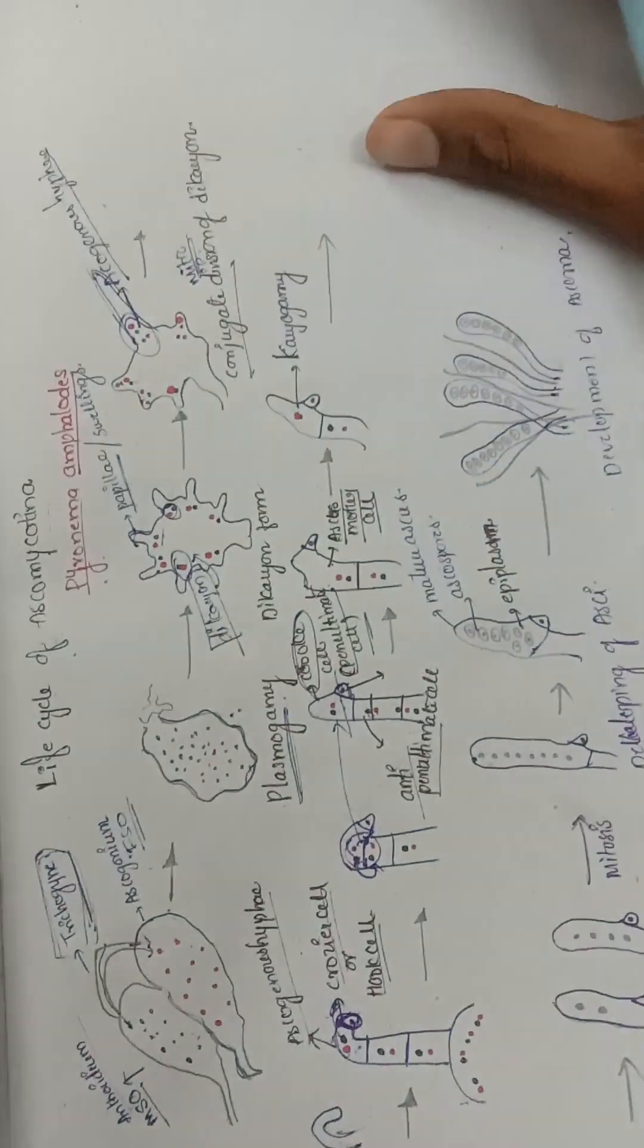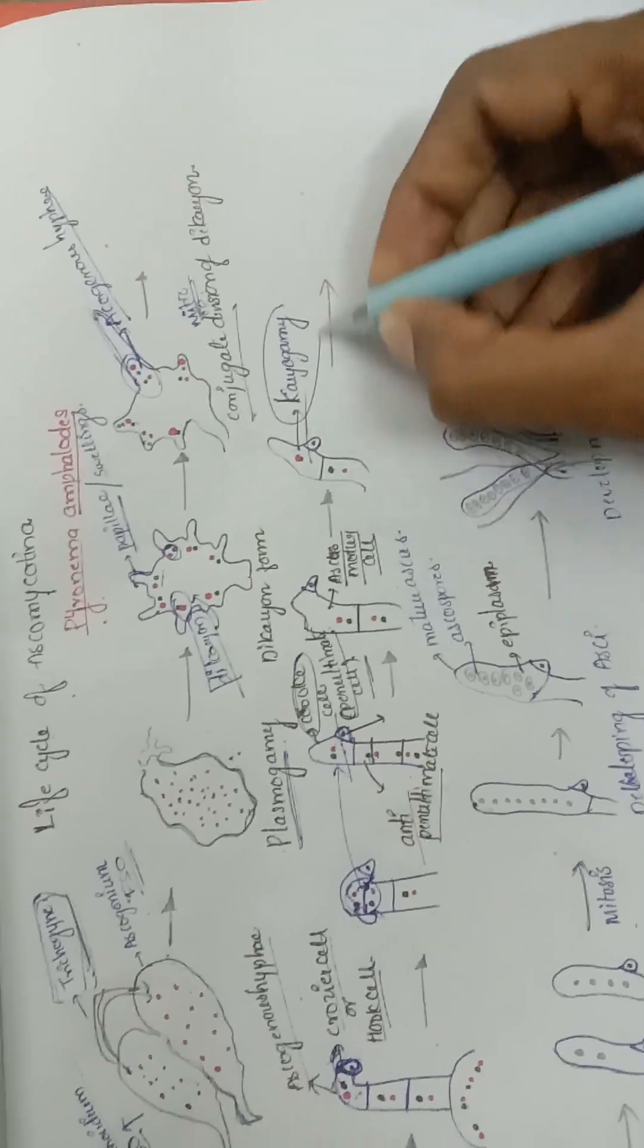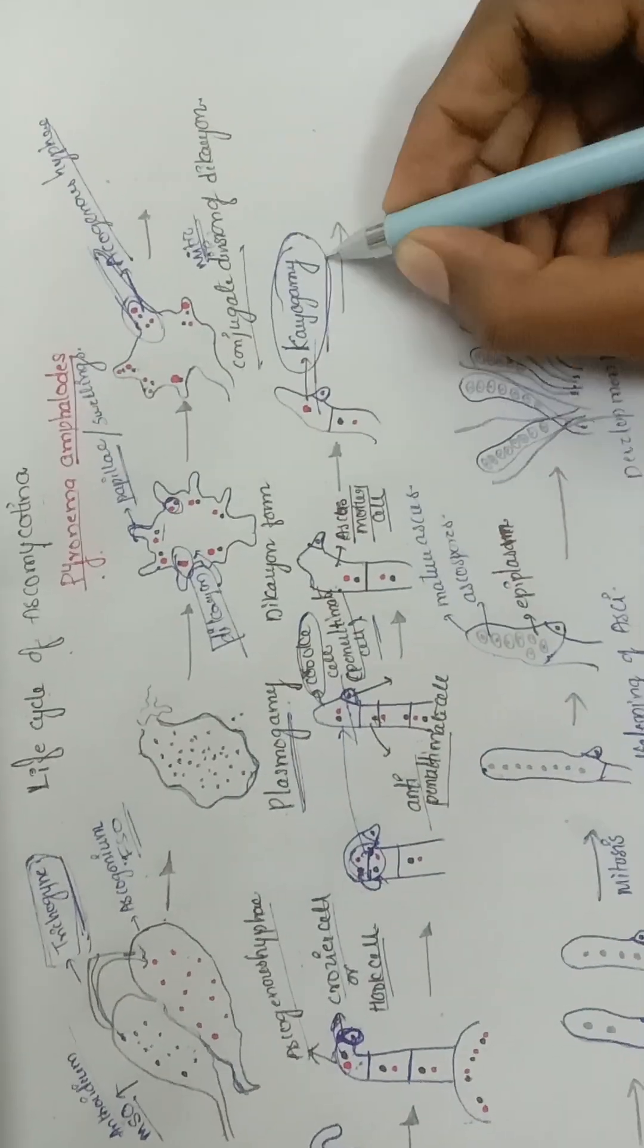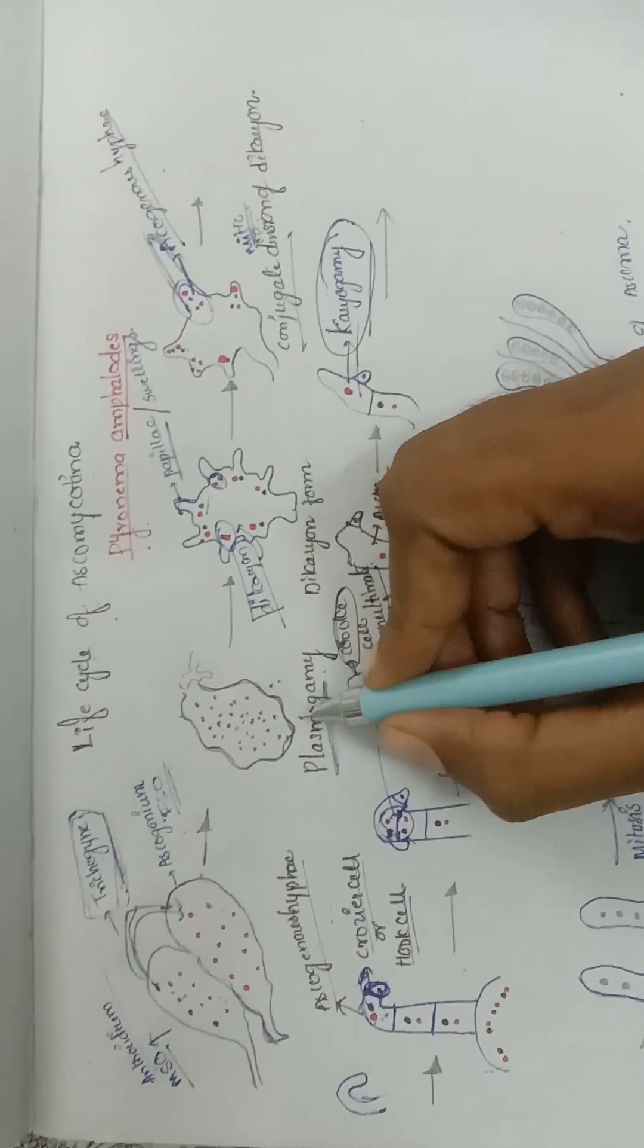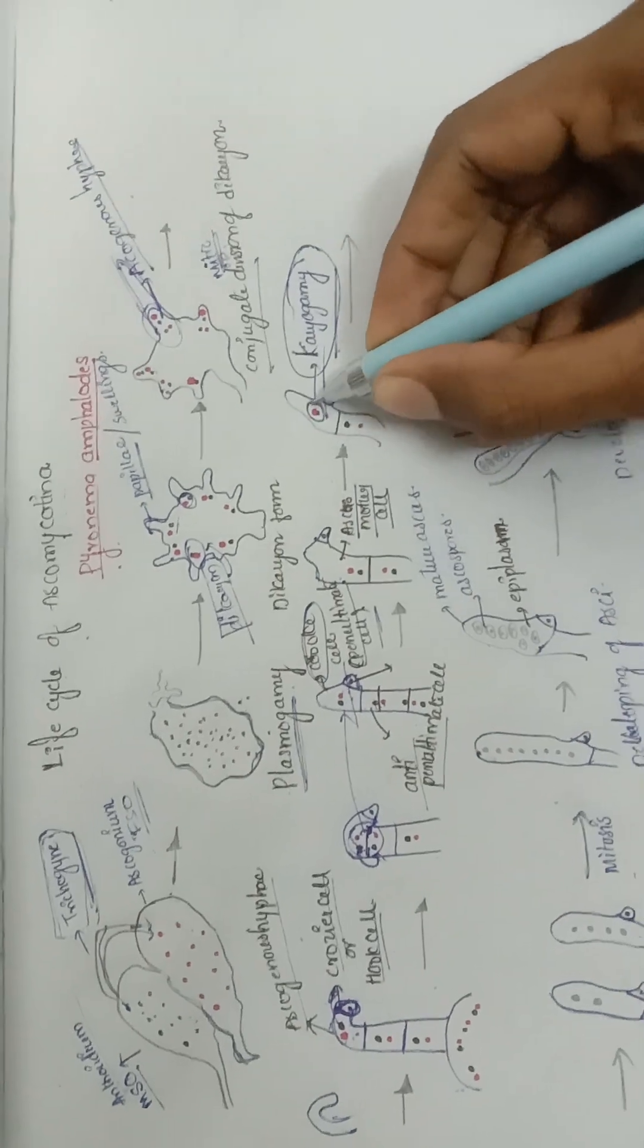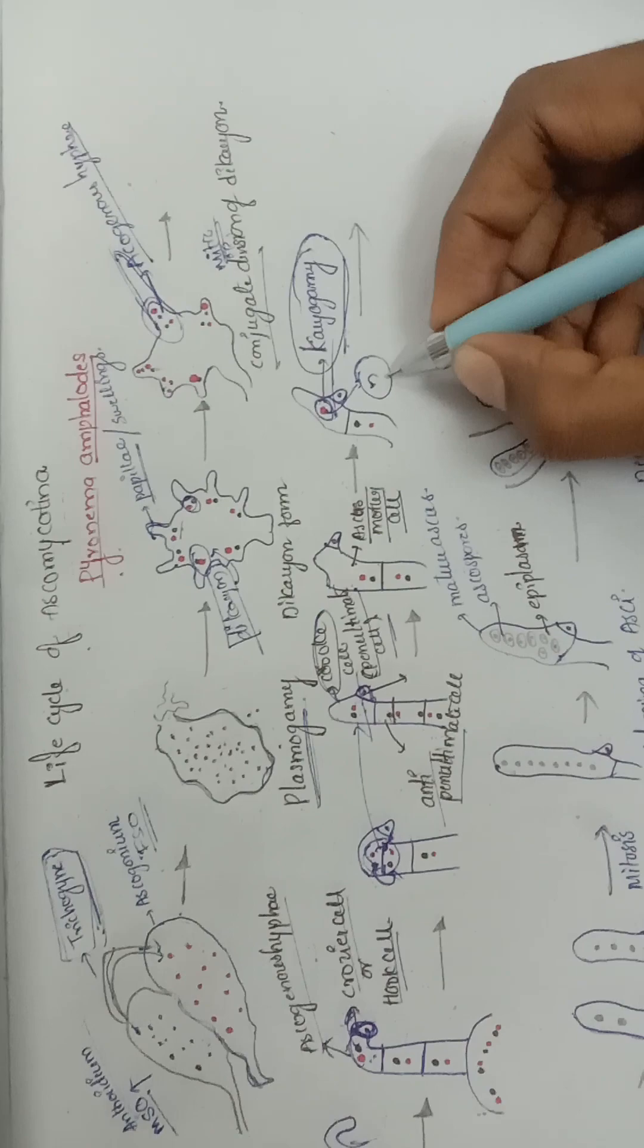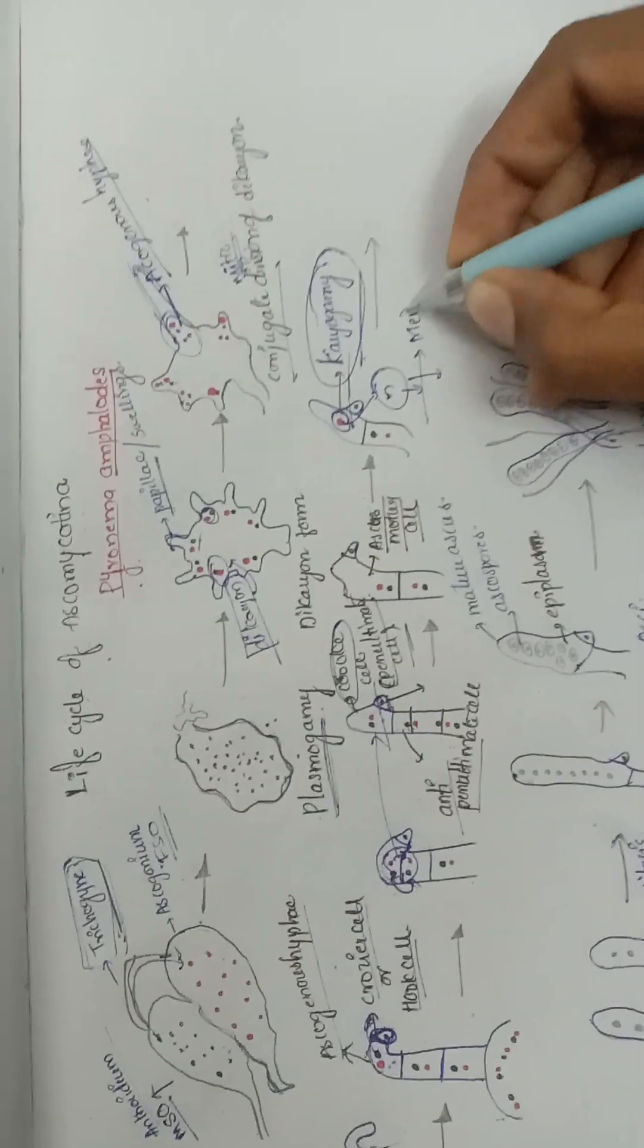In this ascus mother cell, karyogamy takes place. At the initial stage, plasmogamy, and then at the final stage, karyogamy takes place. In plasmogamy, protoplasm fusion occurs, and in karyogamy, fusion of nuclei takes place. This results in a cell that then immediately undergoes meiosis to...